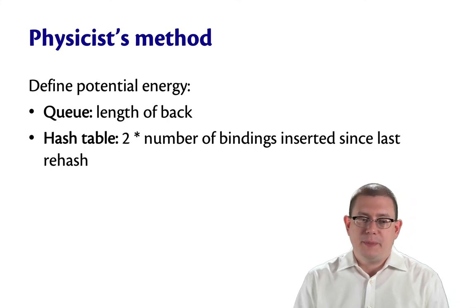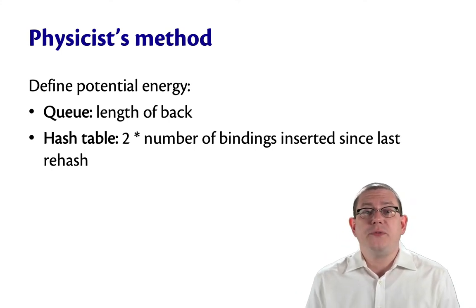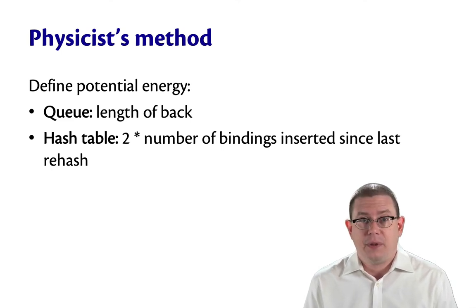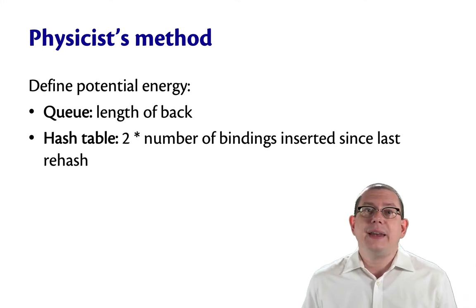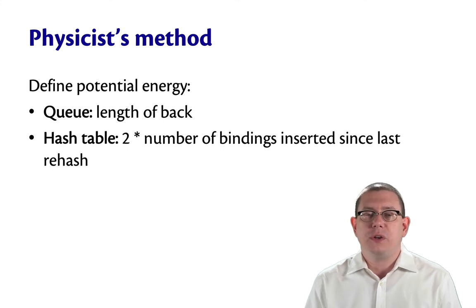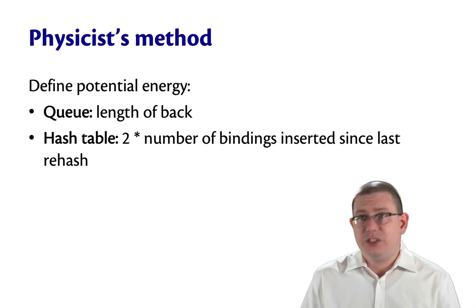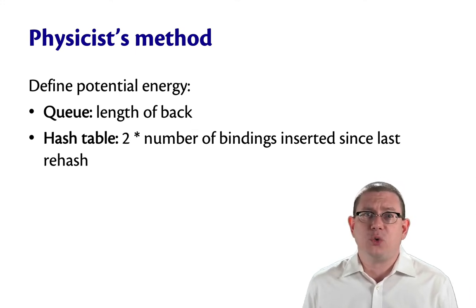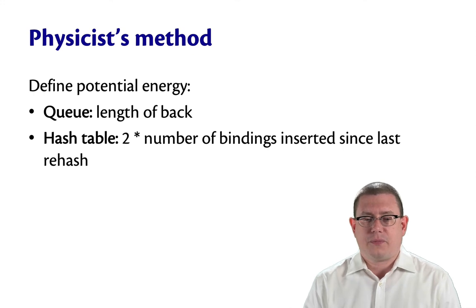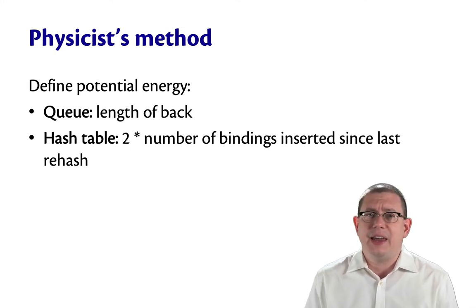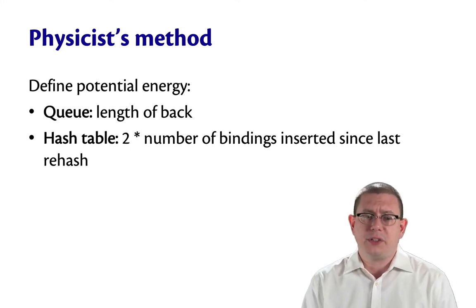For the physicist's method applied to two-list queues, we could define the potential energy of the entire data structure as being the length of the back. By definition that can never go negative, and any time we do the actual operation that causes the back to be reversed, we are able to pay for that with the potential energy stored up — it's just the length of the back, and that's exactly how much we need to reverse the back. With a hash table, we can define the potential energy as two times the number of bindings inserted since the last rehash. For the same reasoning as with the banker's method, that's going to be enough.